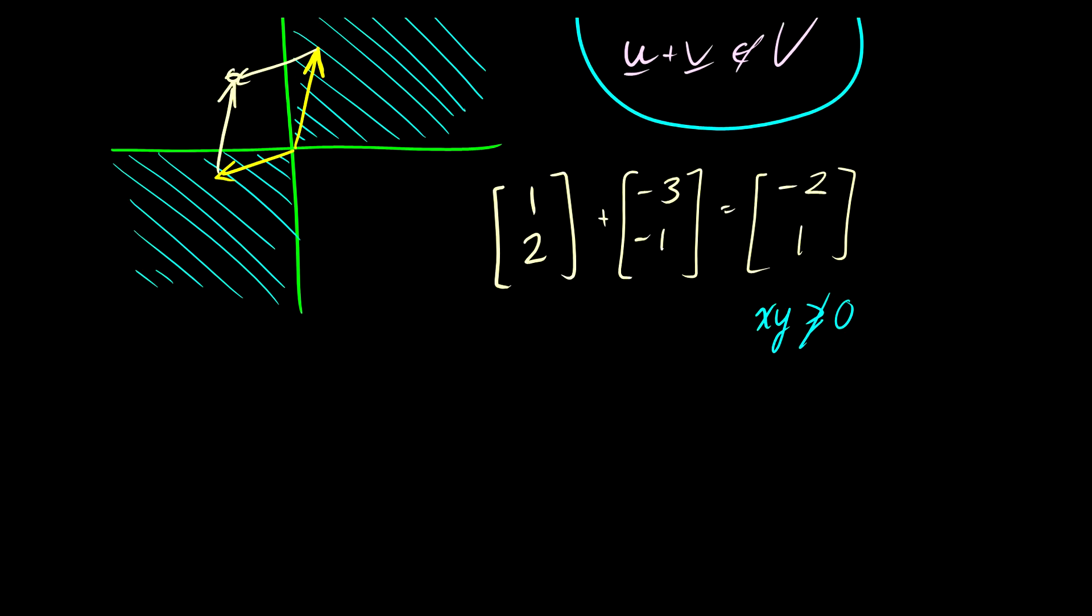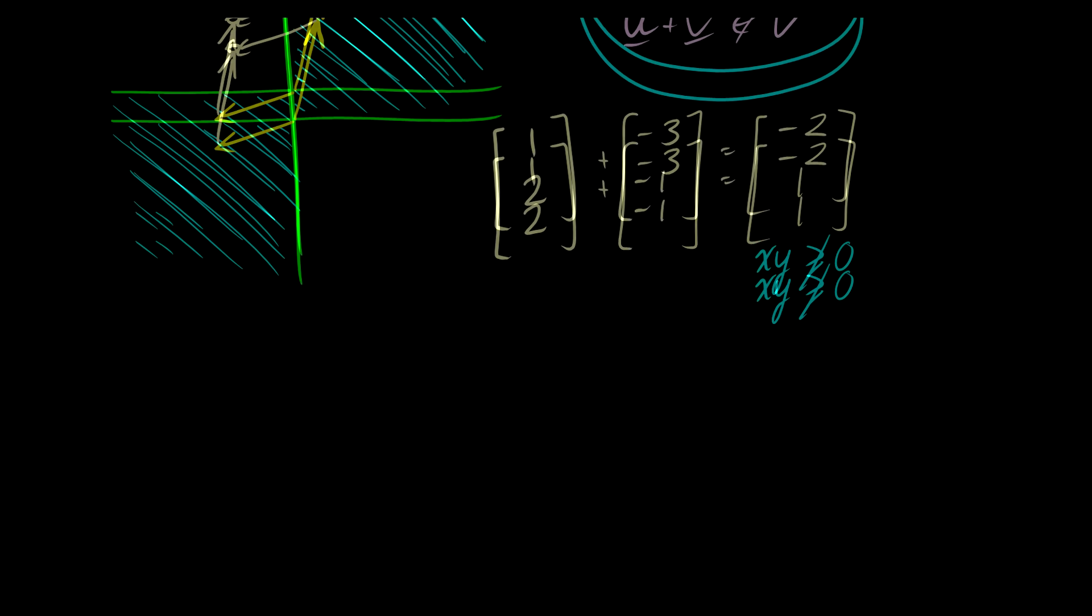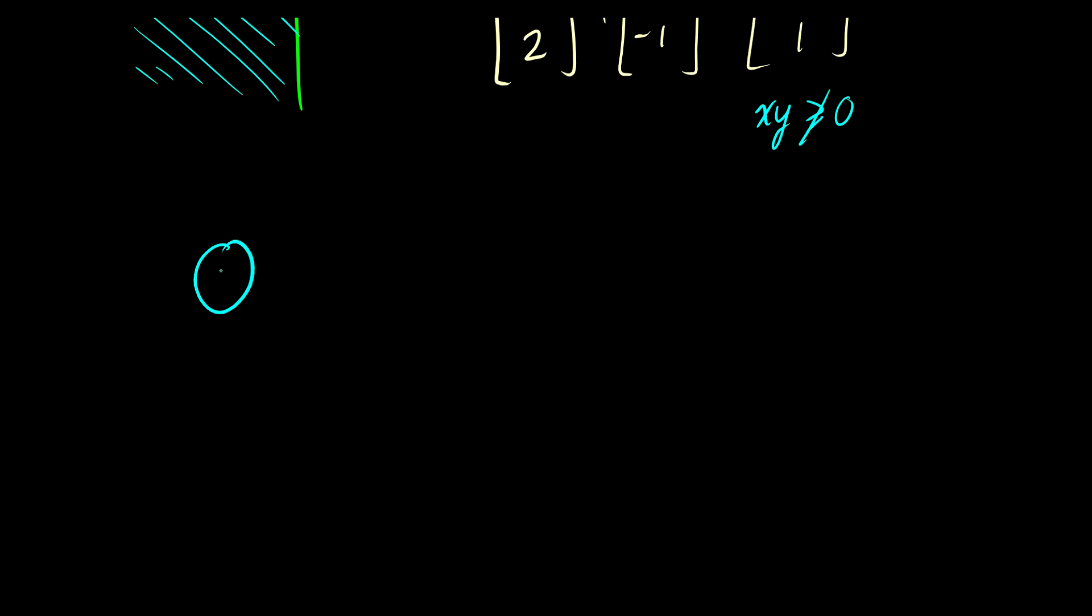Another one to check that is usually on trick questions is, is the zero vector in your vector space? Because sometimes you may be given vector spaces where you can't get the zero vector. And those are not vector spaces. So you must check for those.